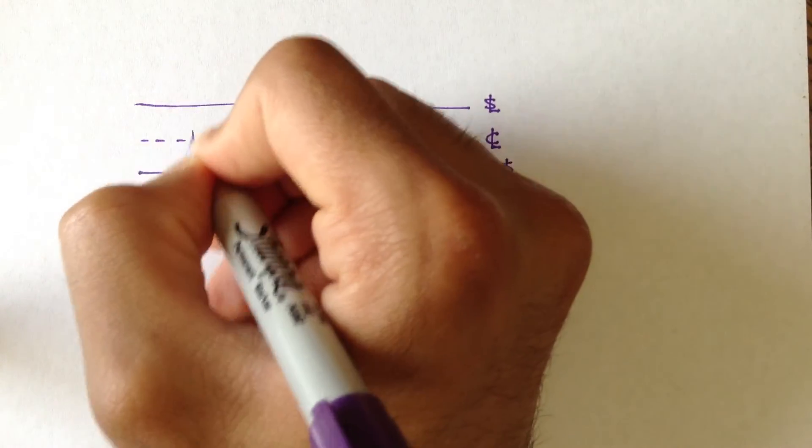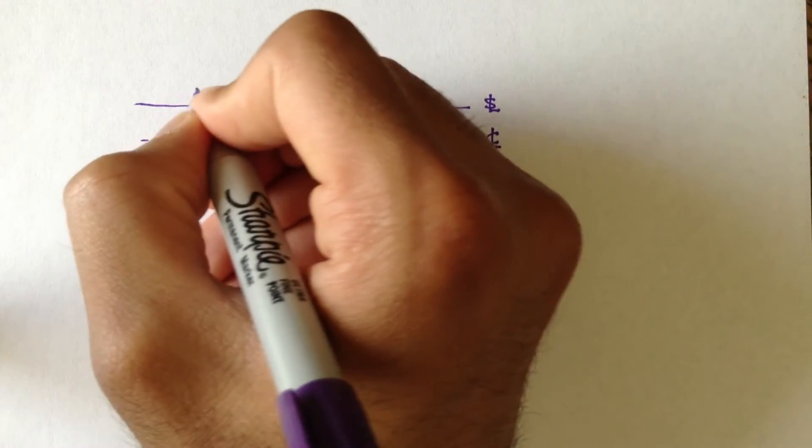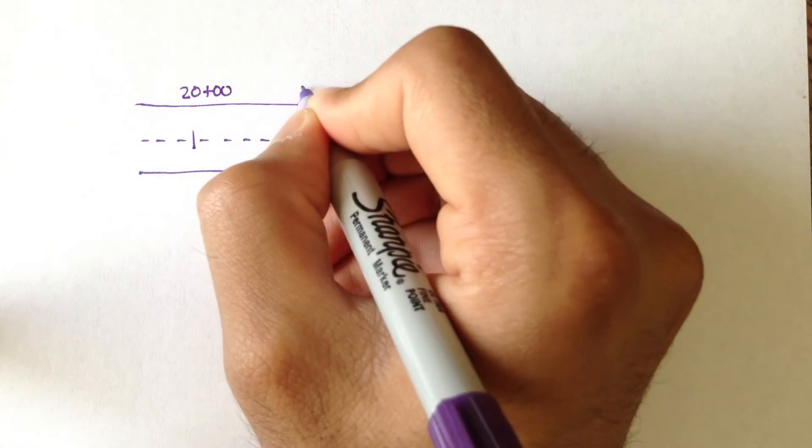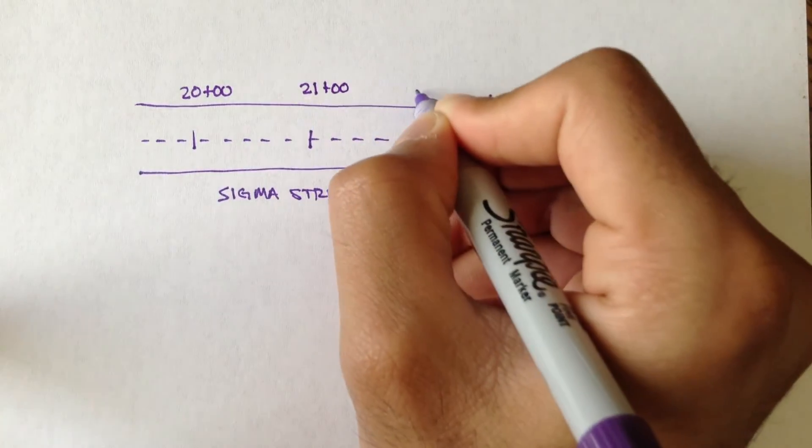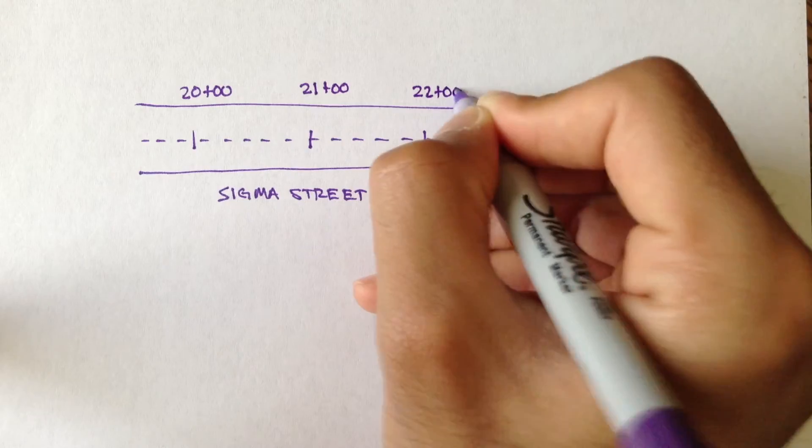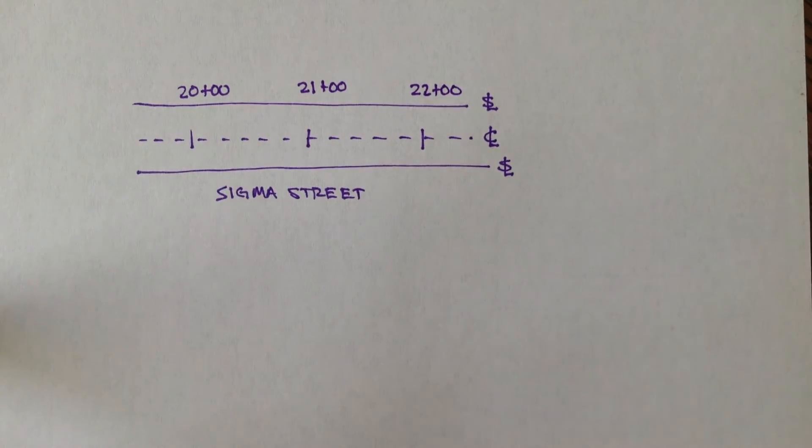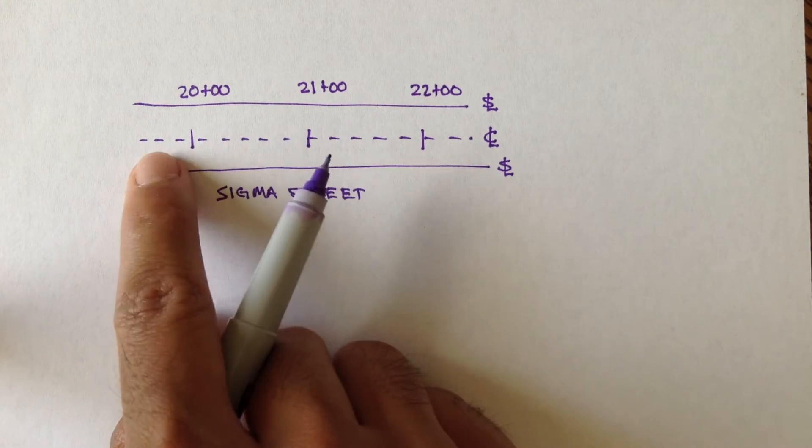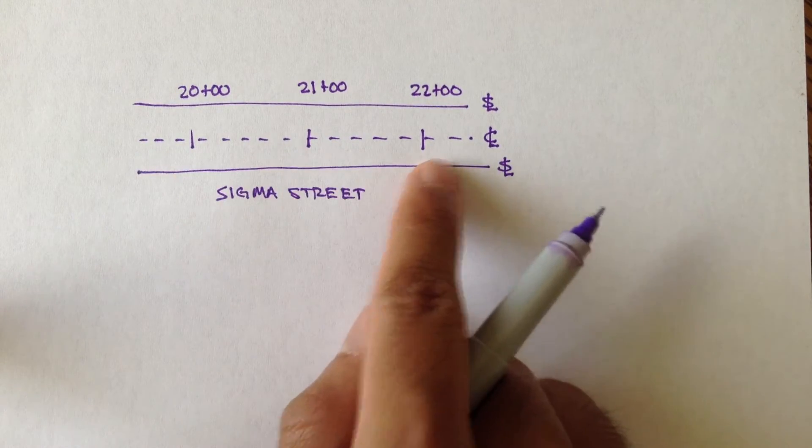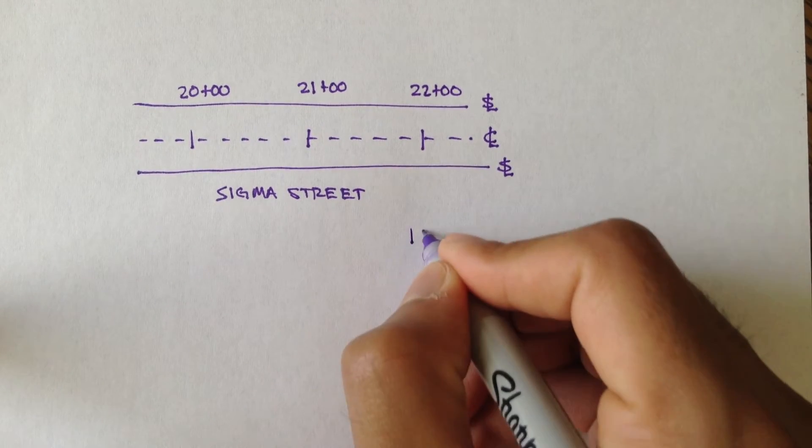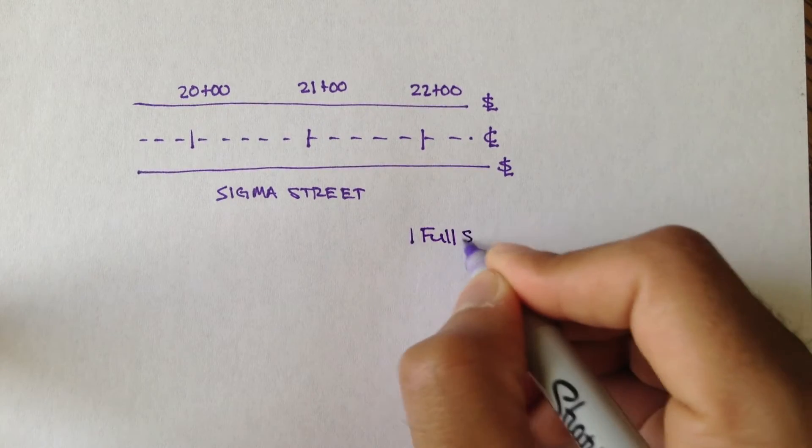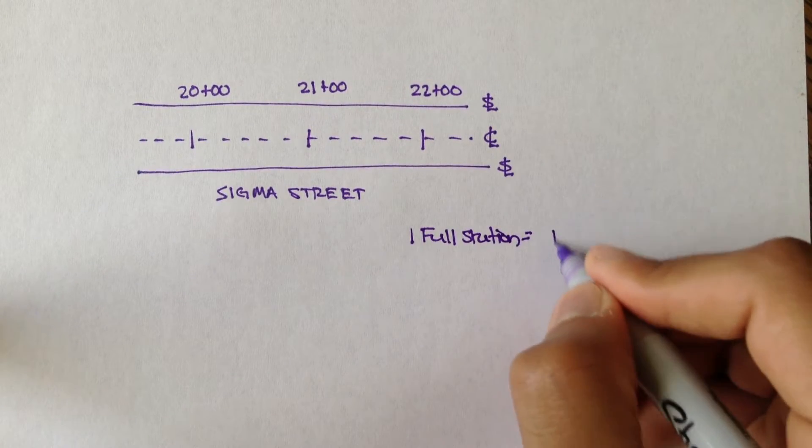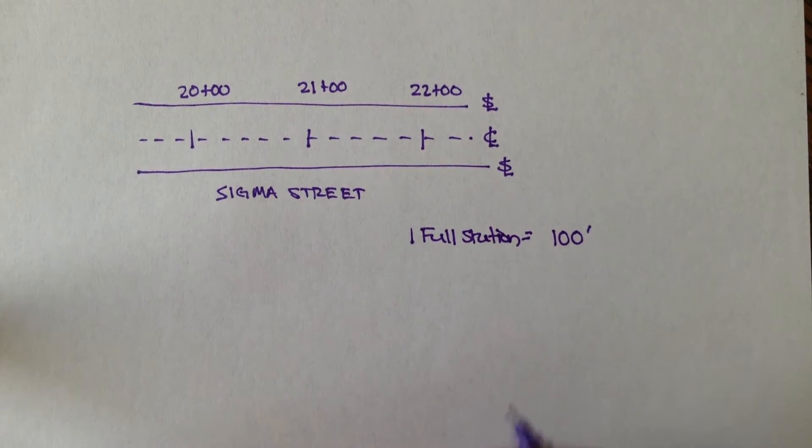And this station was 20 plus 00. This was 21 plus 00. This was 22 plus 00. That's stationing. Each of these tick marks represents a 100-foot interval of a station. One station. One full station is measured out using every 100 feet, in the United States.